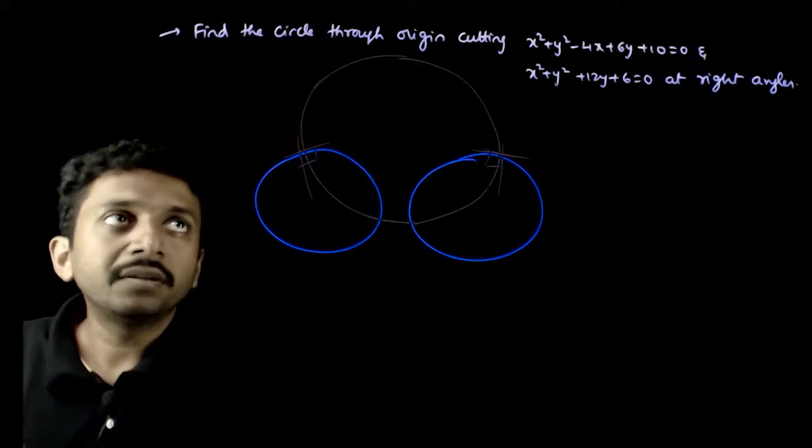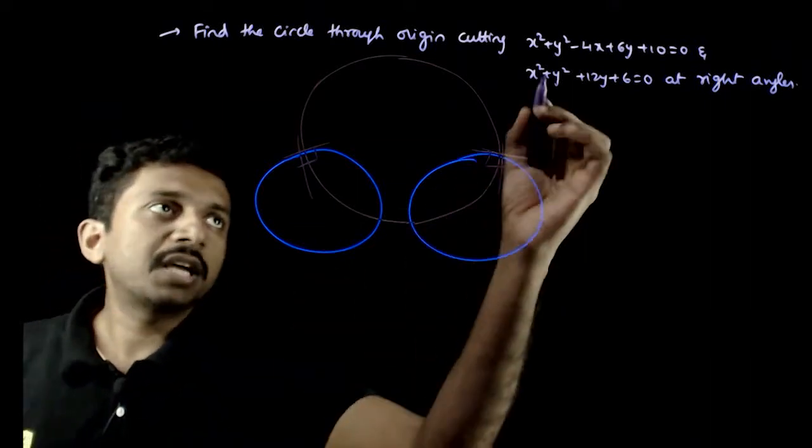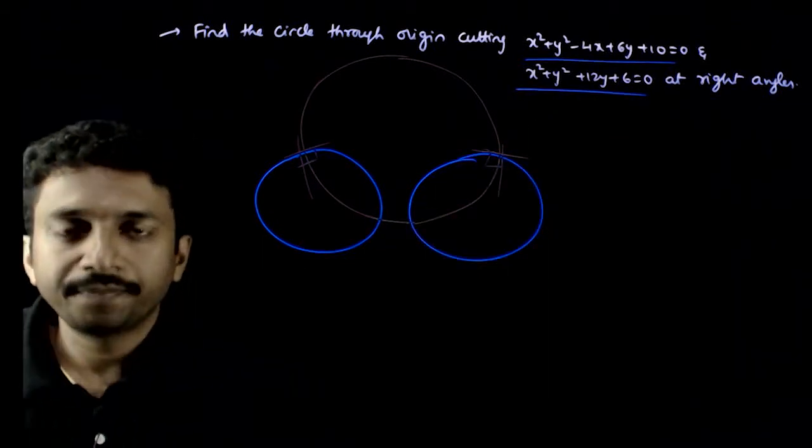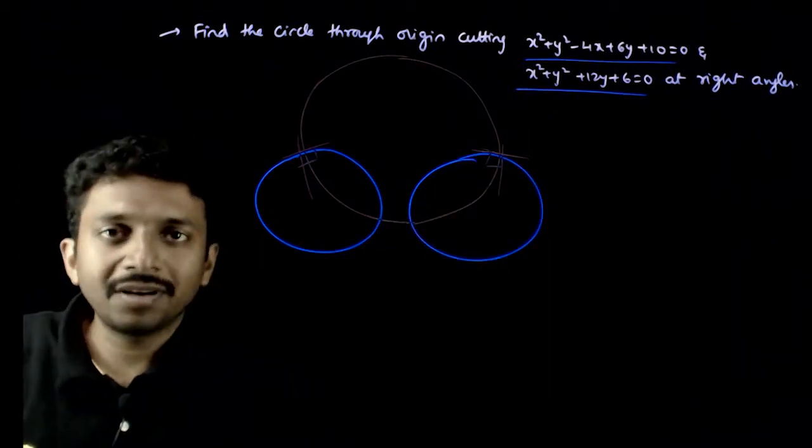Welcome students. So, in this question, you are asked to find a circle which cuts the first circle and second circle orthogonally. At right angles means orthogonally cut karna hai.